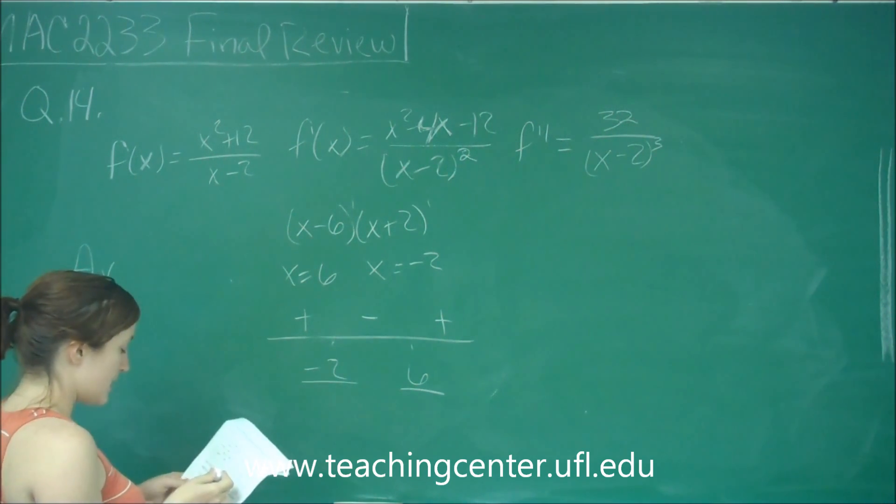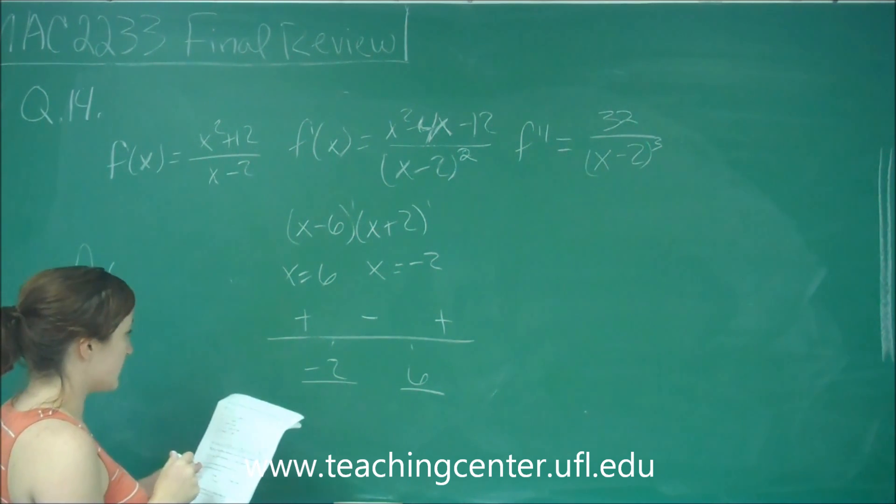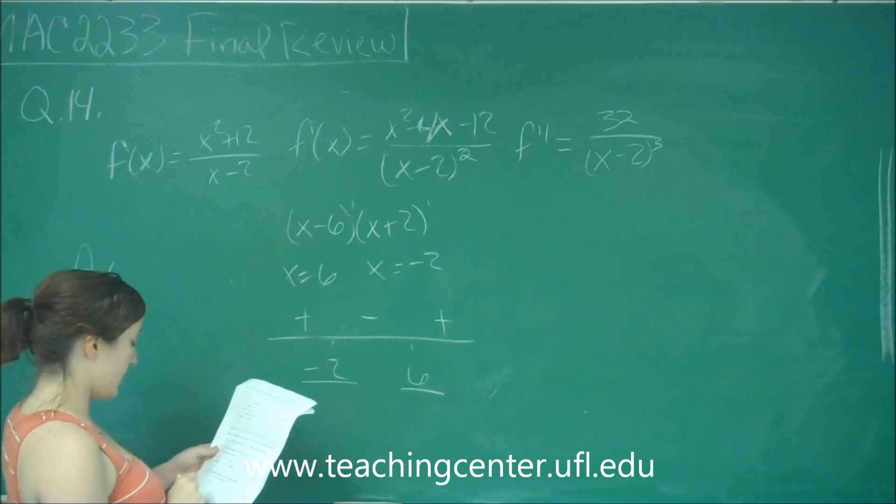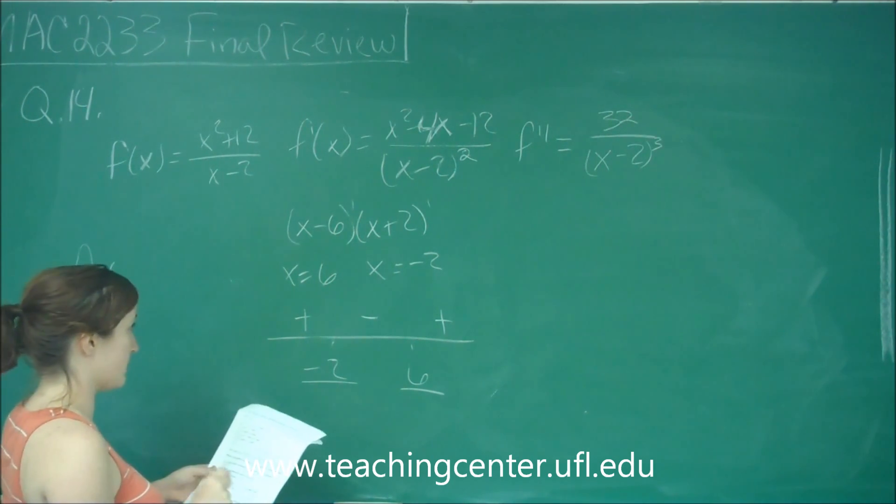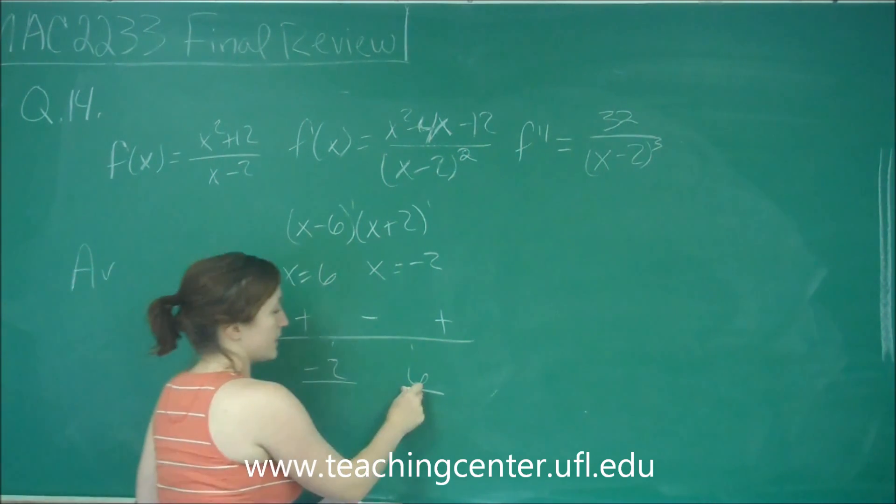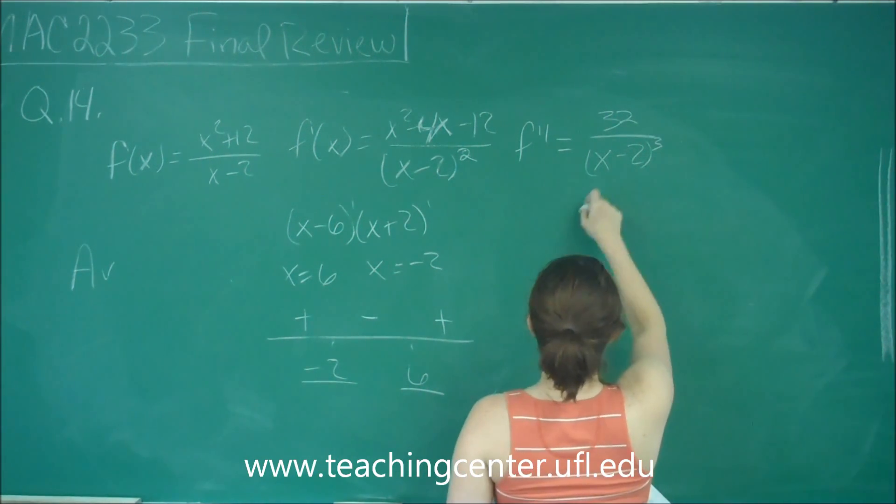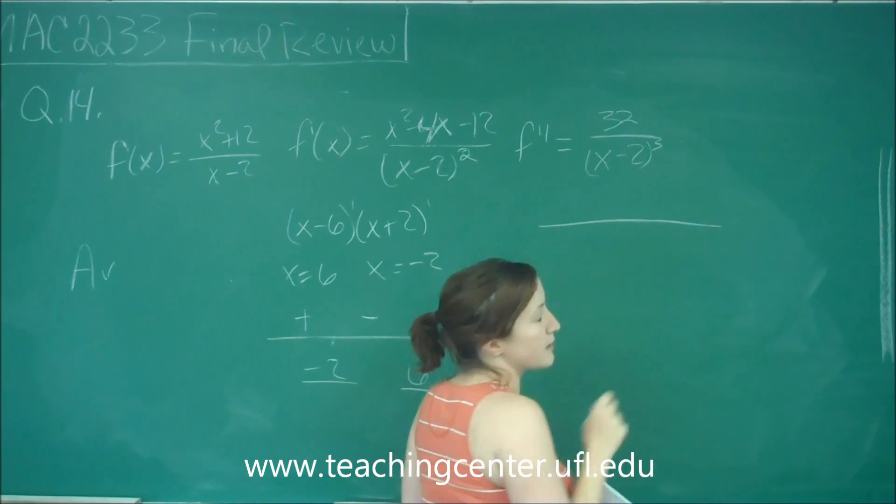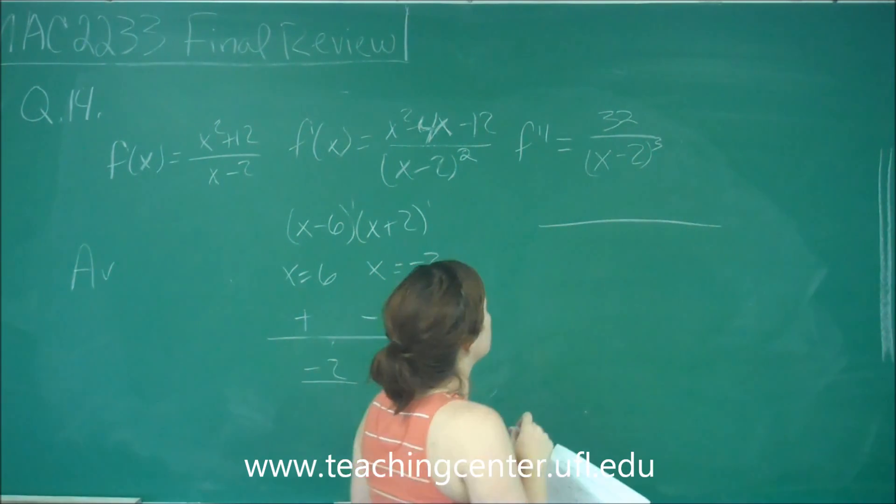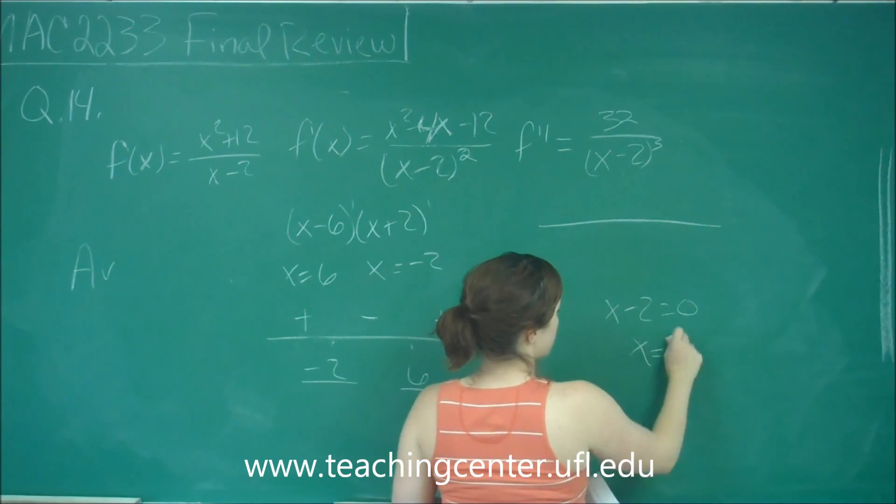Statement B says f of x is both increasing and concave up from 6 to positive infinity. We know it's increasing from 6 to positive infinity. Let's look at our double prime. The only possible critical number we have is when we set the denominator equal to 0. So we get x minus 2 equals 0, x equals 2.